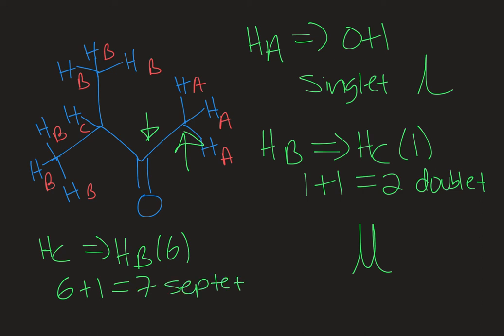This is called a septet. It's symmetrical, so you start with the smallest peak on the outside — one, two, three, four, five, six, seven — tapering off on the sides. In practice, the peaks on the very outside sometimes fade into the baseline and can be difficult to distinguish. There's only one HC split into all these peaks, so the resolution can sometimes be a little poor.